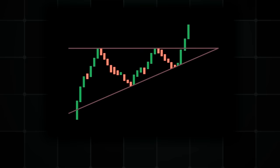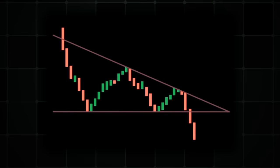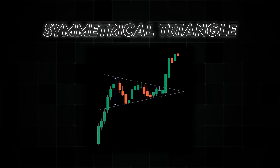Next we have the ascending triangle, characterized by a flat upper trend line and an ascending lower trend line — typically bullish and suggests a breakout upwards. Then we have a descending triangle, which features a flat lower trend line and a descending upper trend line — typically bearish, indicating a potential downward breakout. And then we have a symmetrical triangle, formed by converging upper and lower trend lines — this pattern can tilt either way and suggests a breakout in the direction of the prevailing trend.